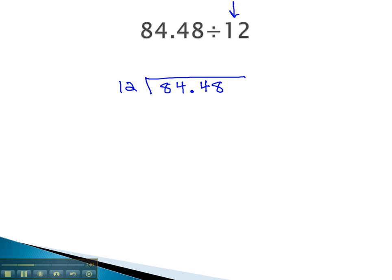Then, we begin dividing just like they were whole numbers, ignoring the decimal. 12 goes into 84, 7 times. 7 times 2 is 14, carry the 1, 7, and one more is 8. And when we subtract, we get 0.